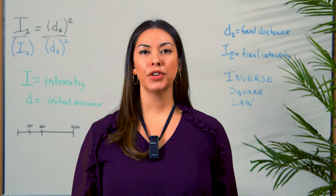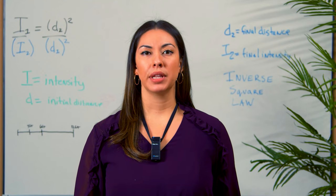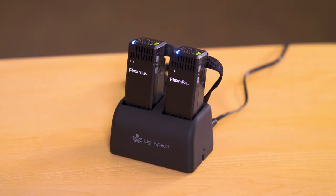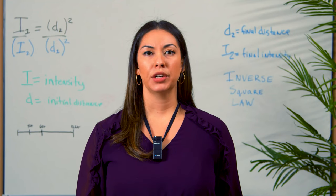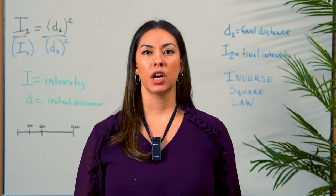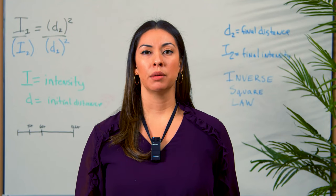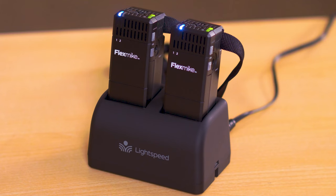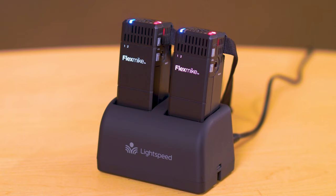The first time you use your FlexMic it should be on the charger ready for use. The charging indicator light is on the top right side of the microphone. It will turn green after a full night's charge indicating the battery is ready. A red light indicates it is still charging.